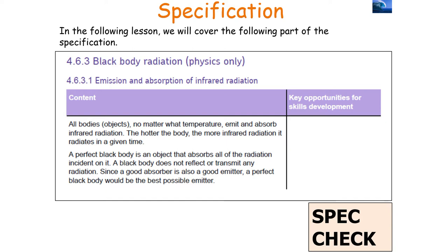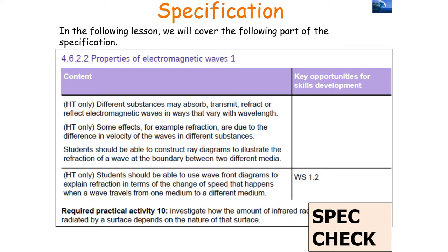We're looking at specification point 4.6.3.1 — emission and absorption of infrared radiation — and 4.6.2.2, required practical activity 10: investigate how the amount of infrared radiation radiated by a surface depends on the nature of that surface.